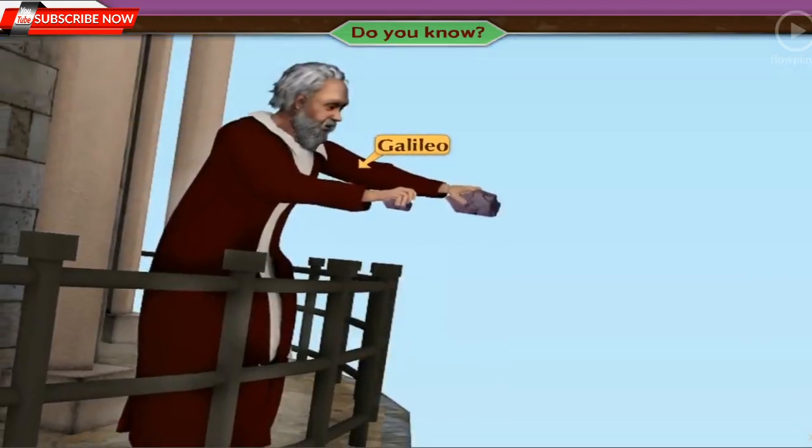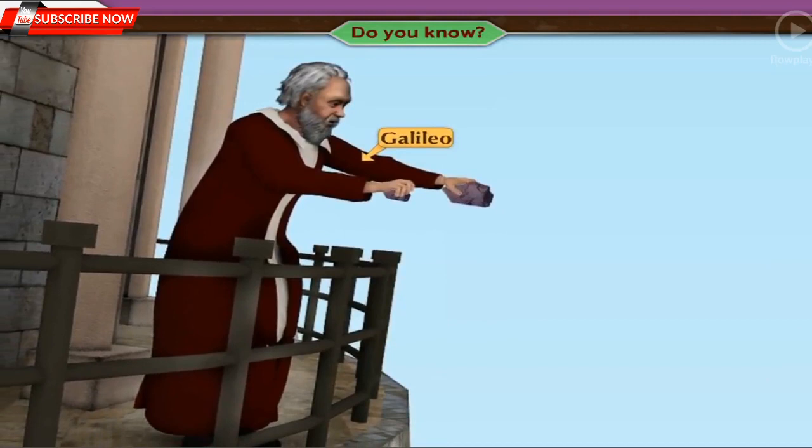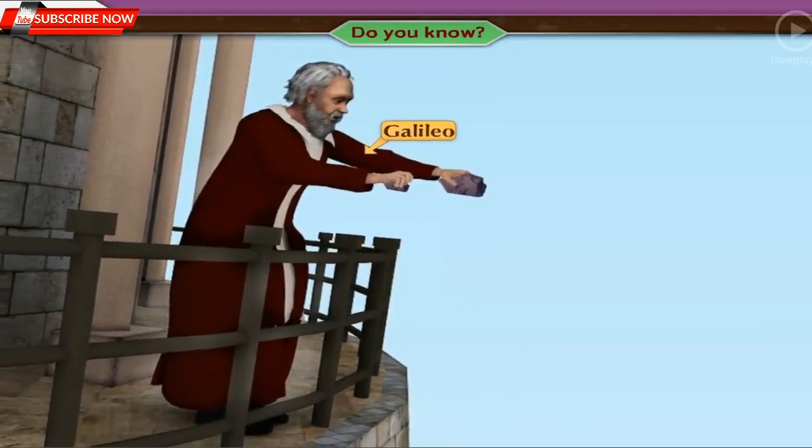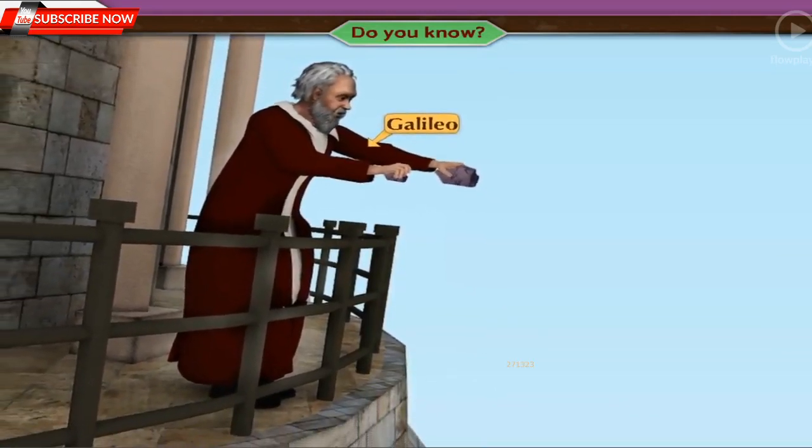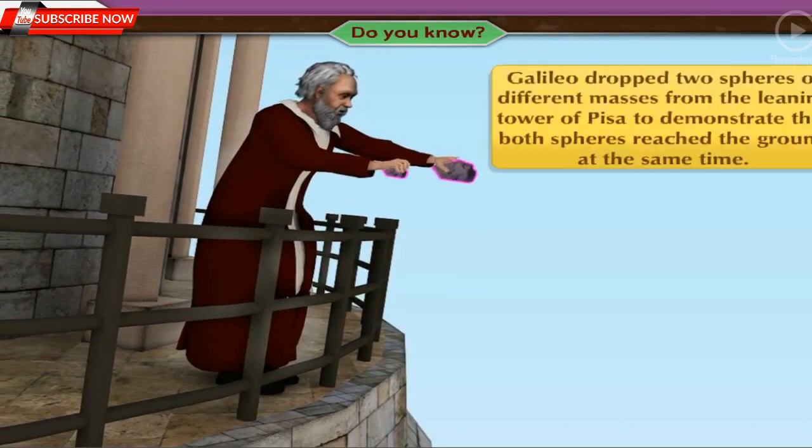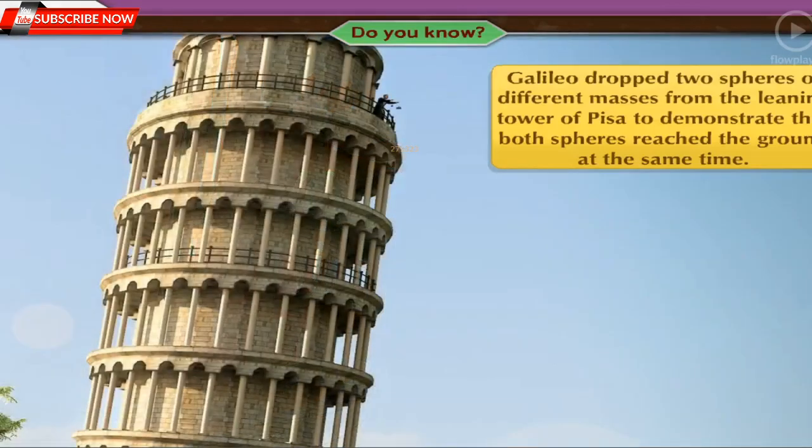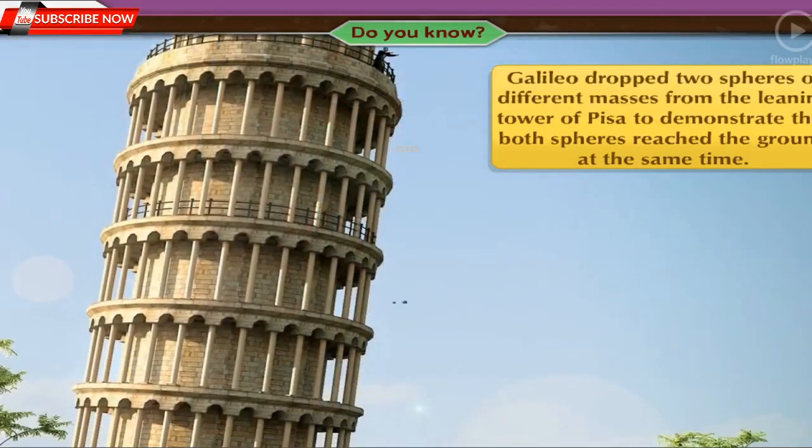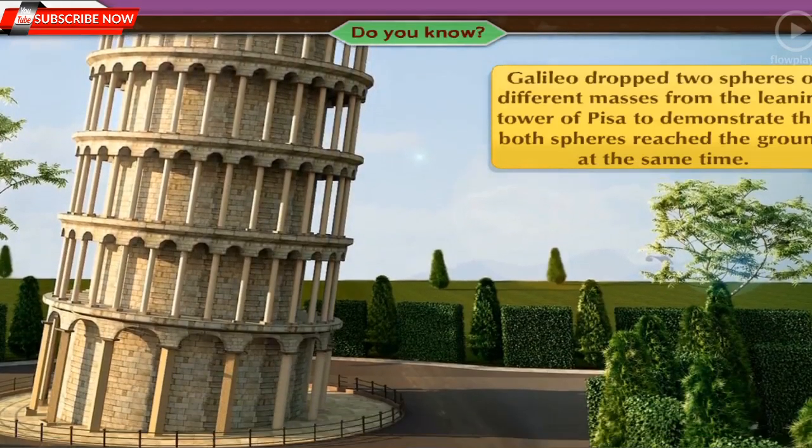It is said that Galileo had performed an experiment around 1590 in the Italian city of Pisa. Galileo dropped two spheres of different masses from the leaning tower of Pisa to demonstrate that both spheres reach the ground at the same time.